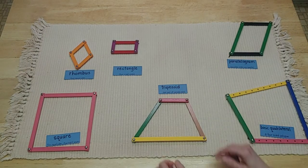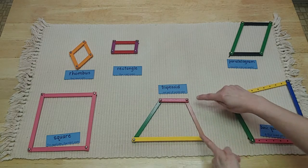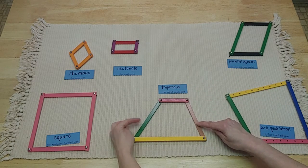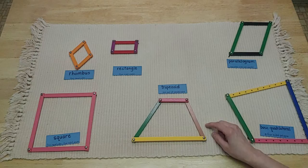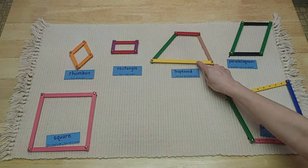Trapezoids are cool because they have just one pair of parallel lines that keep going, while the other sides are different sizes. And that is another quadrilateral.